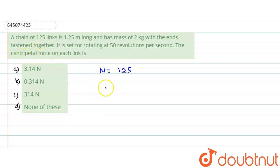What we need to find is centripetal force, that means force per unit on each link, that means the total force divided by the number of links. This is the quantity which we need to find.